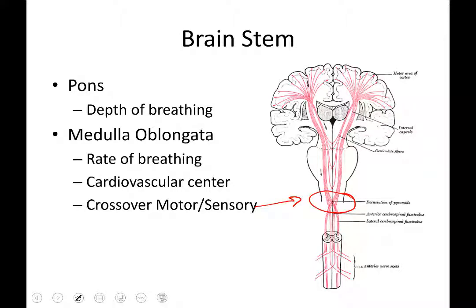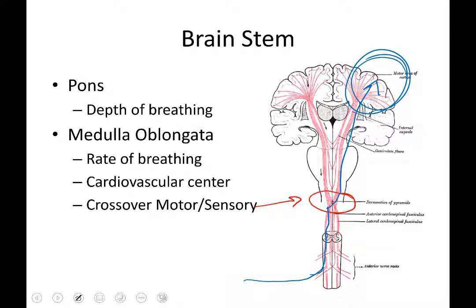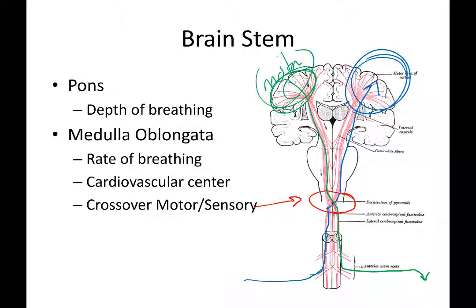An impulse coming in from the periphery travels up the spinal cord and, at the level of the medulla oblongata, crosses over to the opposite side of the body to reach the sensory region on the opposite side of the brain. Likewise, motor control originating on one side of the brain crosses over at the medulla oblongata and controls the muscles on the opposite side of the body.